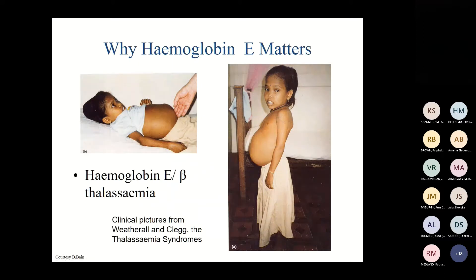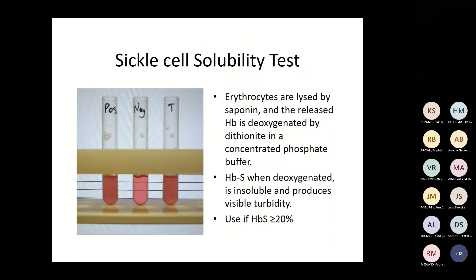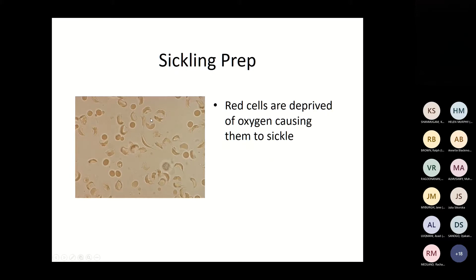Haemoglobin E matters because, depending on the beta mutation, some patients are transfusion-dependent for life. Sickle solubility tests are cheap and quick: erythrocytes are lysed, the released haemoglobin is deoxygenated by dithionite in a concentrated phosphate buffer, and haemoglobin S in deoxygenated form is insoluble and produces turbidity. Haemoglobin must be above 20 g/dL; these tests cannot be used in children with very high F levels. A sickling preparation can also force sickling under a microscope — very useful for patients with S levels less than 20%, especially babies.